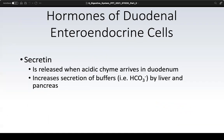Several hormones are secreted by enteroendocrine cells — entero meaning intestine, endocrine meaning they need access to the bloodstream to travel. We start with secretin. This hormone is released when acidic chyme arriving from the stomach, which has a pH of 2.0, enters the duodenum. This triggers the release of secretin, which increases buffering bases produced by the liver and pancreas to help raise the pH of the acidic chyme.